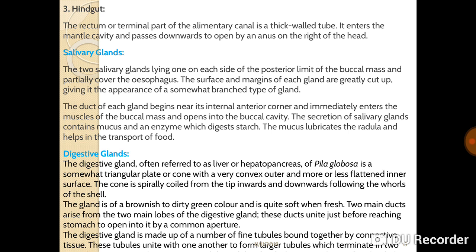The digestive gland, often referred to as the liver or hepatopancreas of Pila, is a somewhat triangular plate or cone with one convex outer and a more or less flattened inner surface. The cone is spirally coiled from the tip inward and downward following the whorls of the shell. The gland is brownish to dirty green in color and is quite soft when fresh.